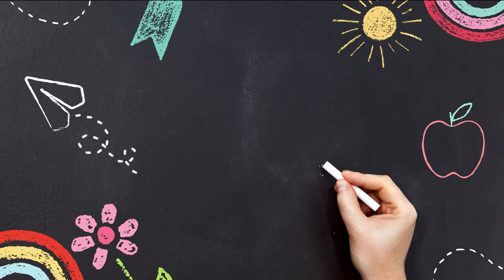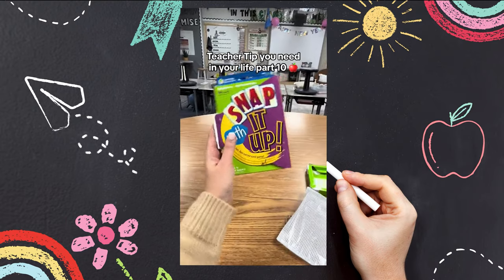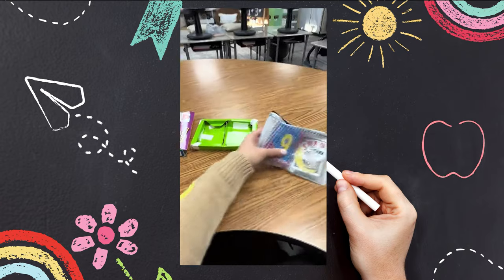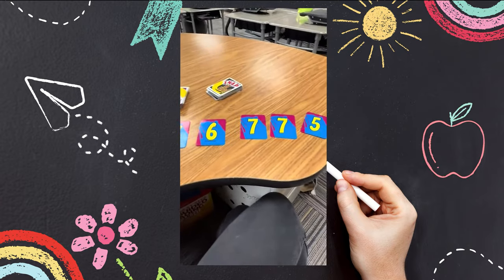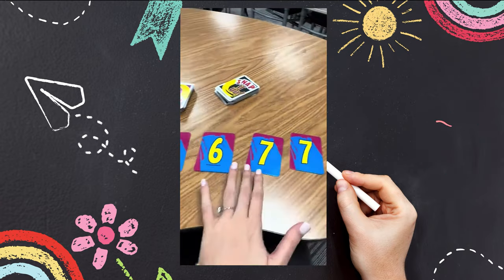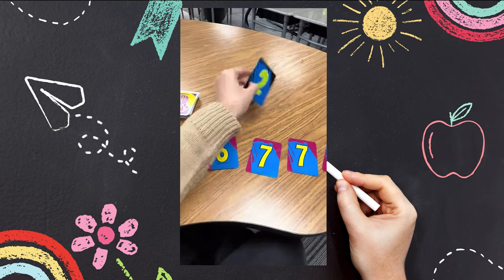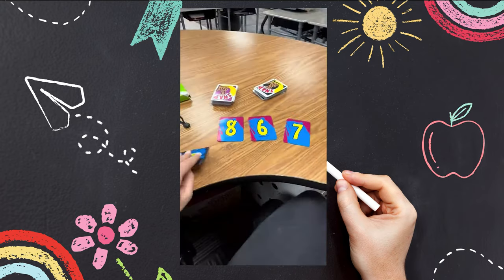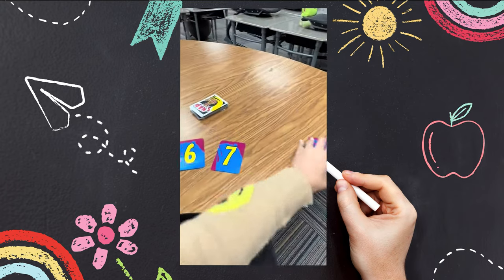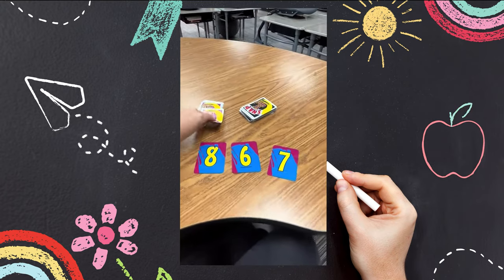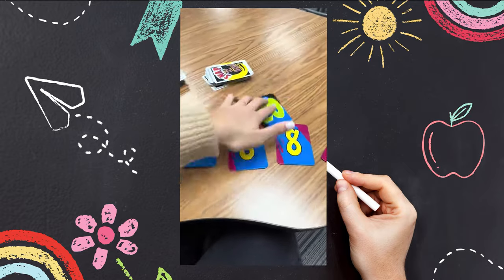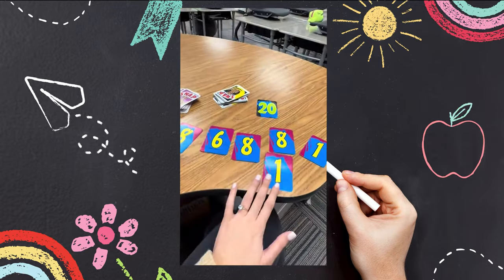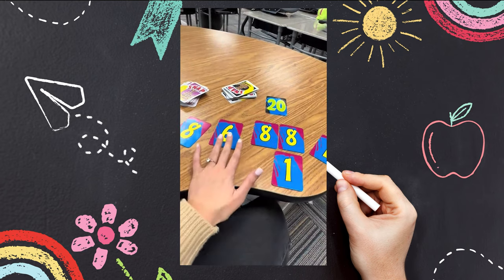There's one more math game I completely forgot to show you that my students love — it's called Snap It Up. To play, each player gets five purple number cards. Their goal is to make an equation that equals the black card in the middle. For example, seven minus five is two, and you get the black card as your point. Then you discard the cards you used and draw new ones. The game continues until you're out of cards and you see who collected the most. If everyone gets stuck, just draw another card until someone can make it work. This game is perfect for small groups and early finishers, and there's a phonics version too.